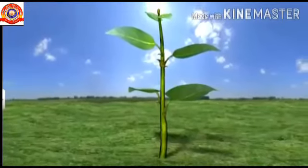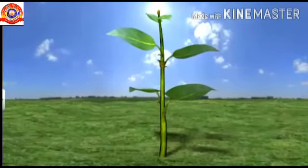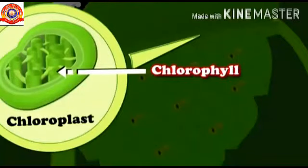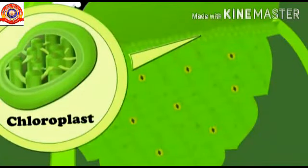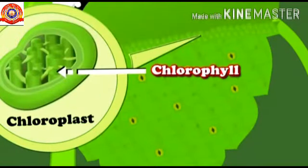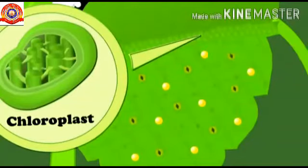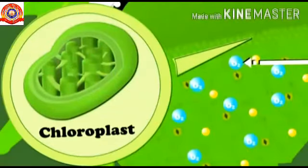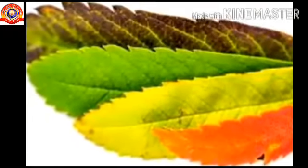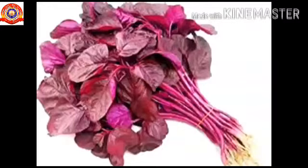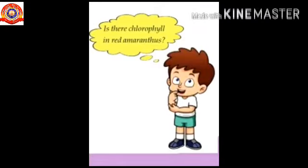Now you know how each plant gets maximum sunlight. We have already seen that chlorophyll, the green color pigment in leaves, helps the plant to trap sunlight needed for photosynthesis. But are all leaves green in color? Haven't you seen the red amaranthus? Photosynthesis takes place in them too — so is there chlorophyll in red amaranthus to perform photosynthesis?